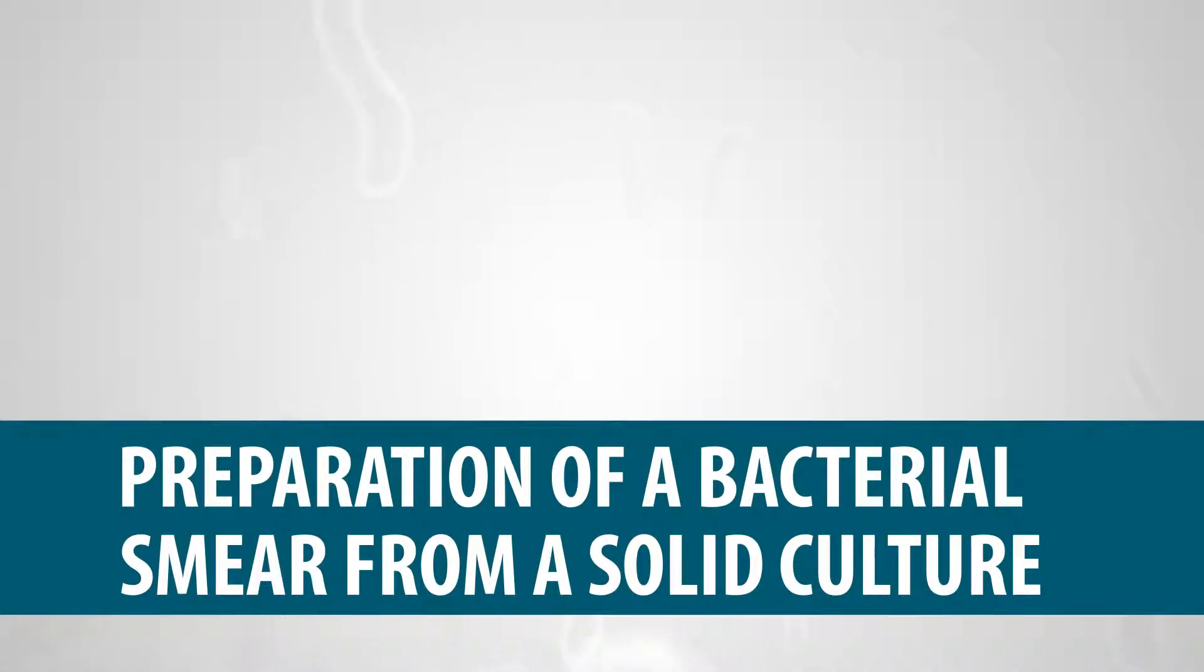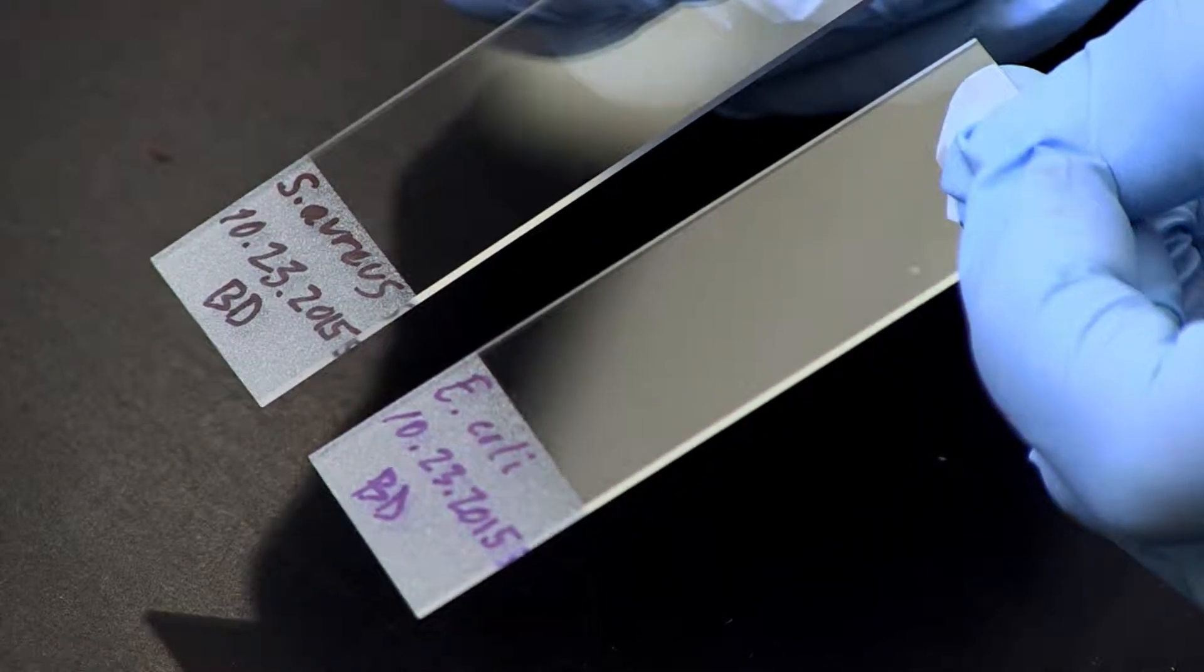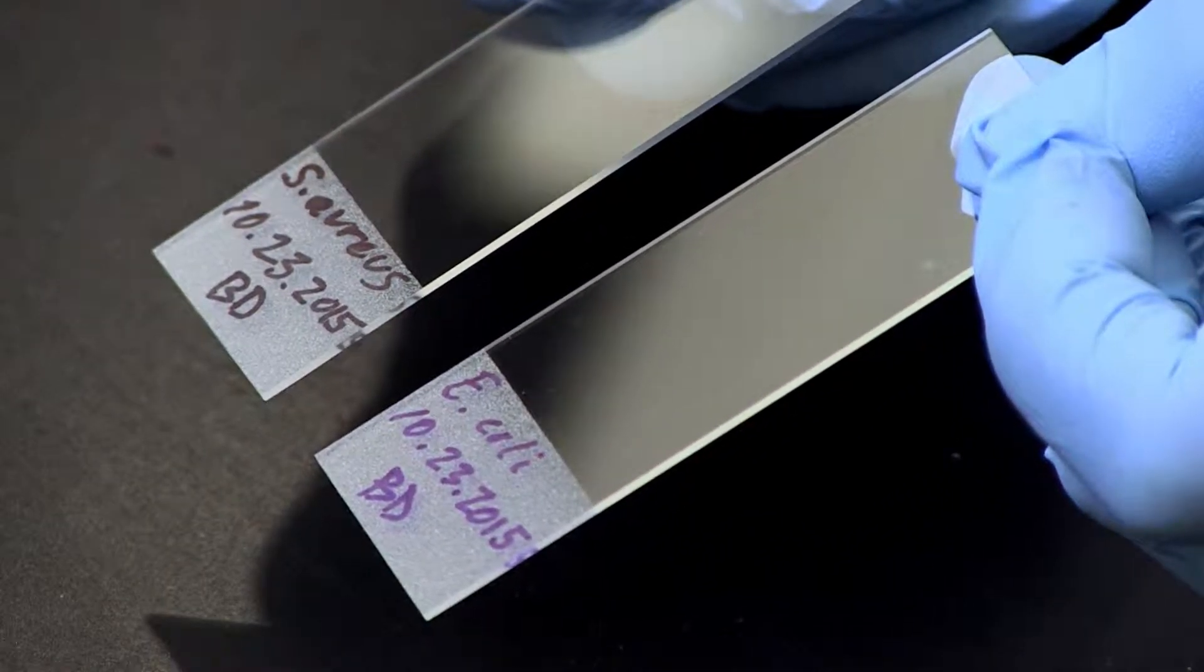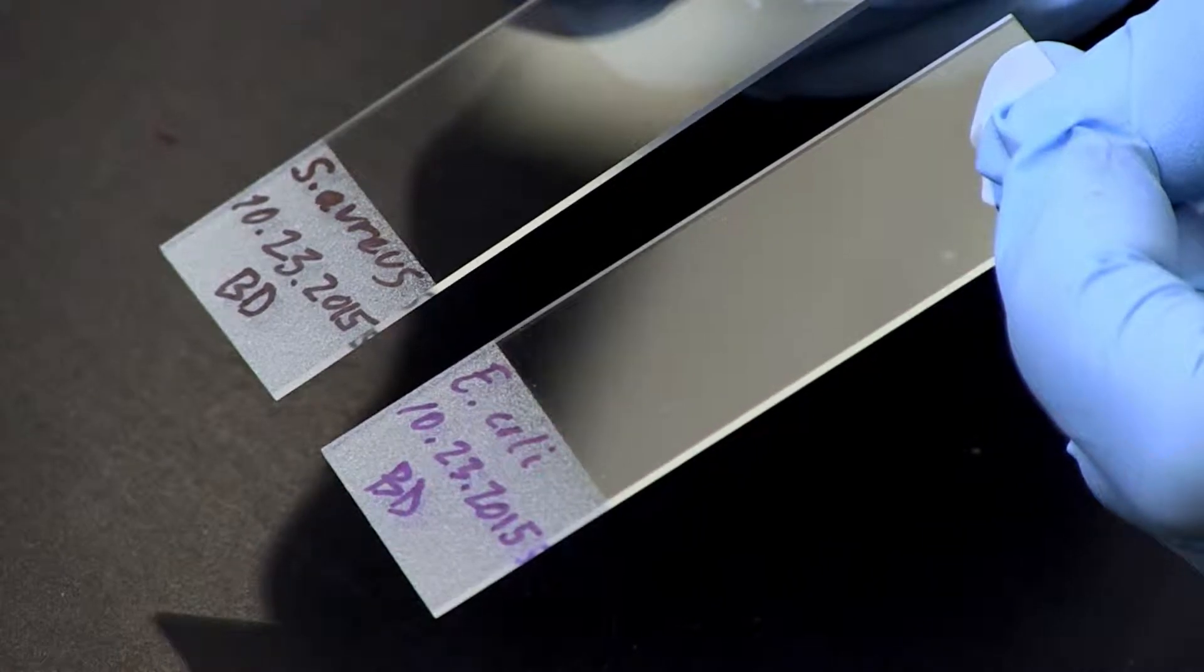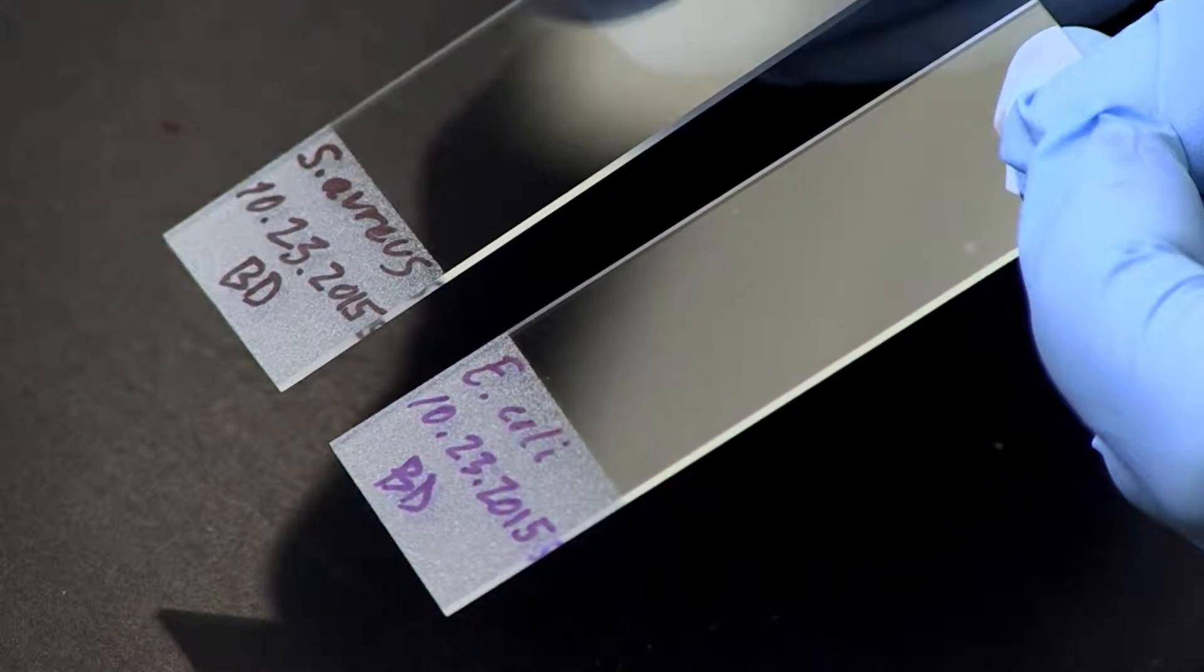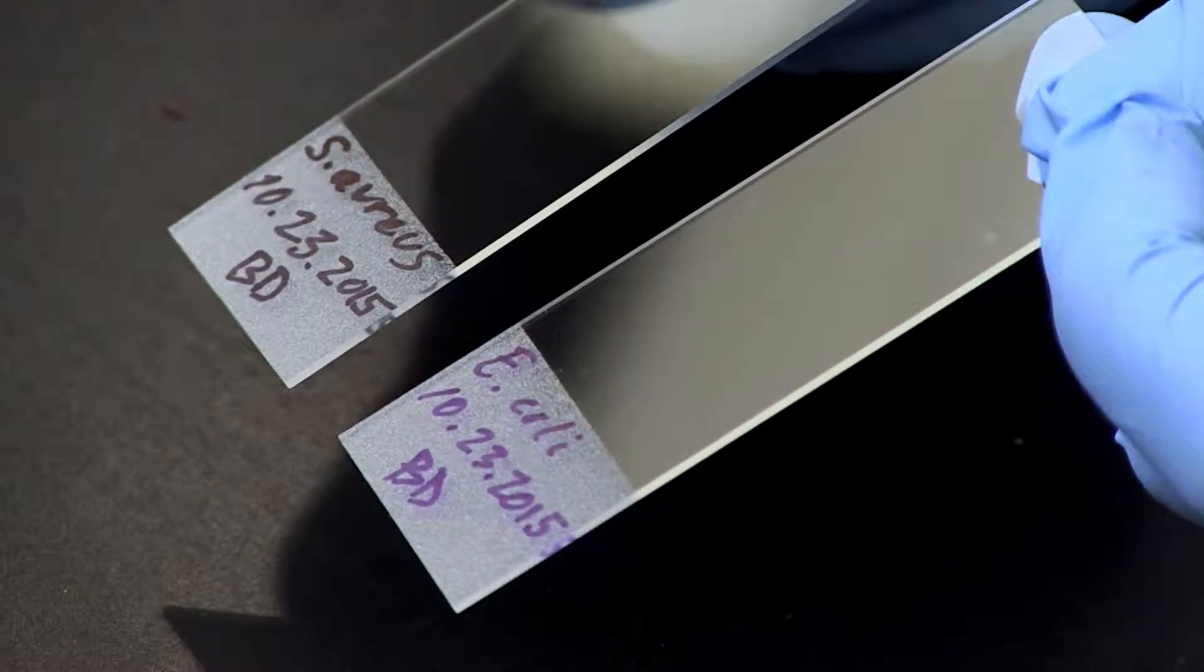Preparation of a Bacterial Smear from a Solid Culture. First, label a clean microscopic slide with the name of the bacterial species used in this exercise, today's date, and your initials.